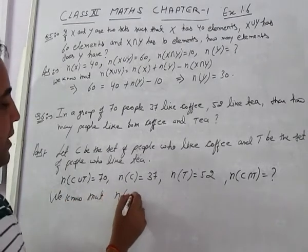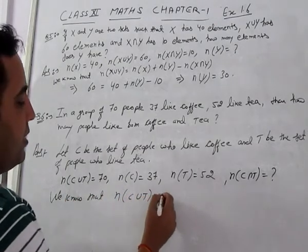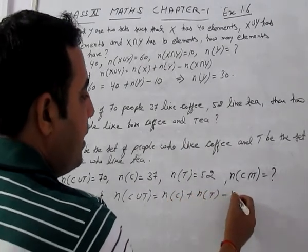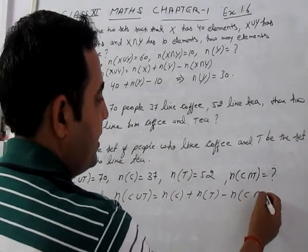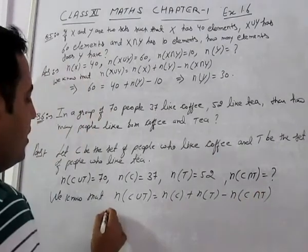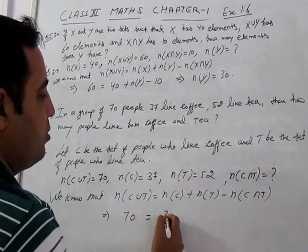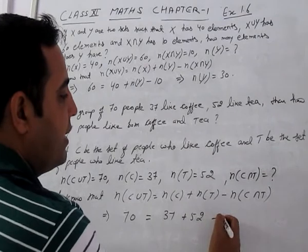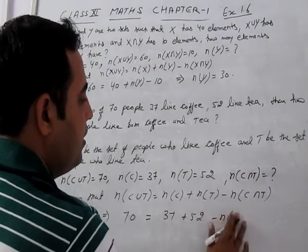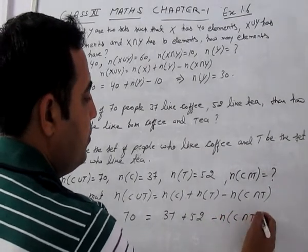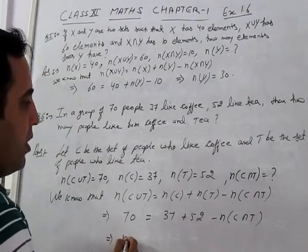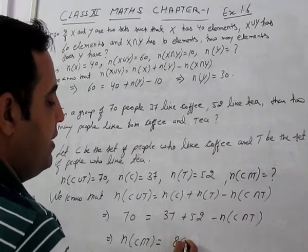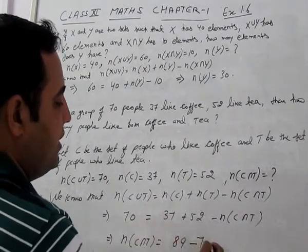Using the formula: n(C∪T) = n(C) + n(T) - n(C∩T). Putting all the values: 70 = 37 + 52 - n(C∩T). So n(C∩T) = 37 + 52 - 70 = 89 - 70 = 19.